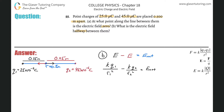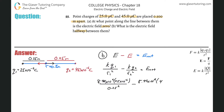We can factor out common terms, but let's just plug in and calculate. So it's 8.99 × 10⁹ multiplied by 25 microcoulombs — you need that in coulombs — divided by 0.25 squared. The radius is the distance between the charge and the point of interest. Minus 8.99 × 10⁹ times 45 × 10⁻⁶, all divided by 0.25 squared. That equals the net electric field.